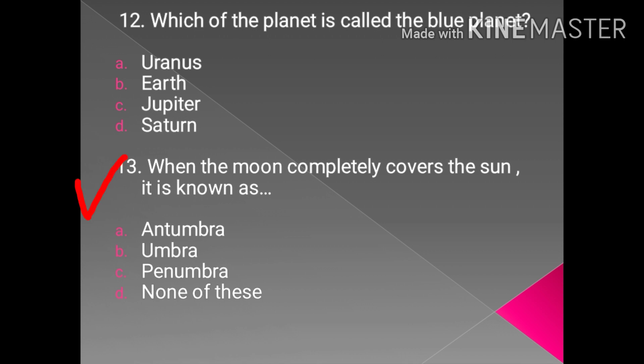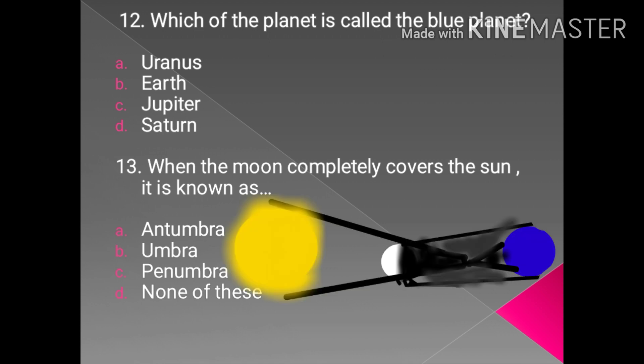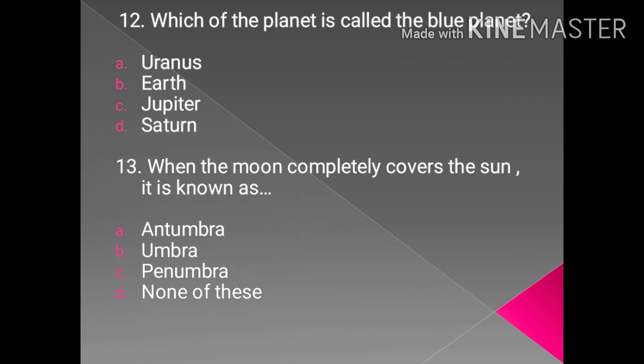Question number 13: when the moon completely covers the Sun, it is known as umbra. Let us explain this through the diagram. So this darkest shadow is known as umbra, and the angular shadow formed from this shadow is known as antumbra, and this light shadow which is large in amount is known as penumbra.